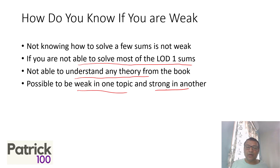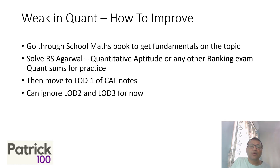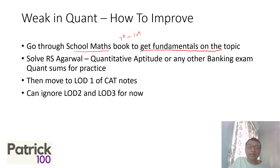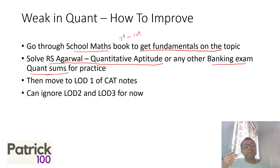Once you identify your weak topics, here's how to improve. Step one: if your fundamentals are weak, go to the school maths books from 7th to 10th for that topic and get your fundamentals right. If you don't have time — say you're already in June or July — then directly go to RS Agarwal Quantitative Aptitude or any banking exam concepts book and practice sums from there for whichever topics you find yourself weak in. Solve and keep practicing as many sums as you have time for.